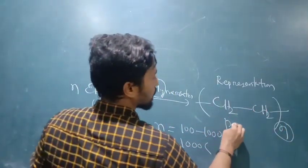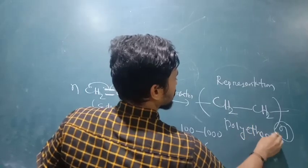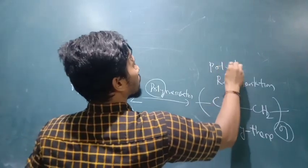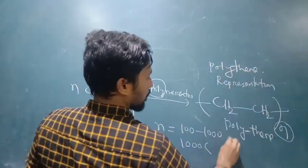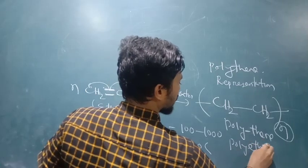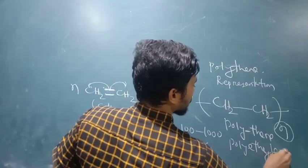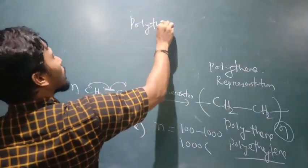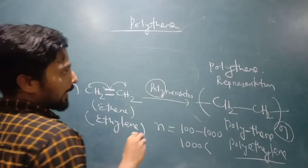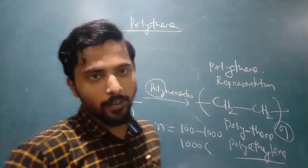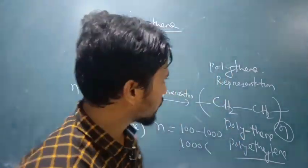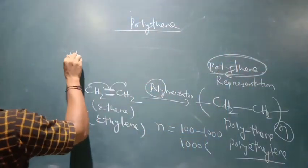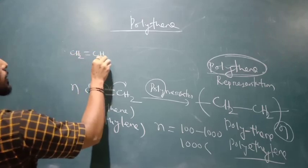What is polyethylene? Polyethylene is written as poly-ethylene. You can omit the 'y' or 'e' and write polythene. What is polythene? N number of ethene molecules are combined together to form a polymer having N times repeating units — that is polythene.